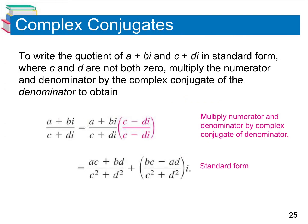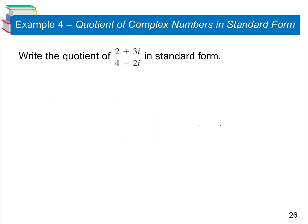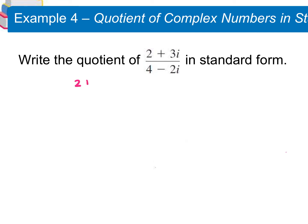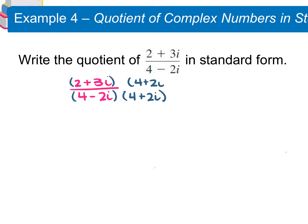The next part goes over simplifying fractions that have complex numbers in the denominator. We're going to take the complex conjugate of your denominator and multiply both the numerator and the denominator by it. It will cancel out your i in the denominator, which is what you're looking for — you cannot have an i in the denominator in your answer. So if we look at this example, we're given 2 plus 3i over 4 minus 2i. We're writing the quotient in standard form, so our answer must be in the form a plus bi. We're going to foil out with the top and the bottom.